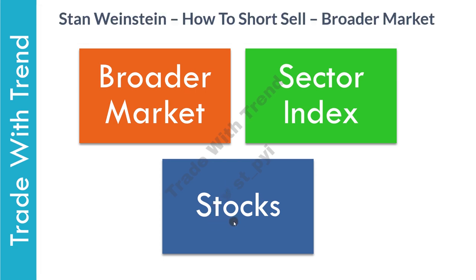If you're trading in the Indian markets, you should first check the trend of Nifty 500, then for a sector index like banks, and then check the trend of individual banking stocks. Similarly, if you're trading in the American markets, you should first check the trend of S&P 500, then for a sector trend like technology, and then check the trend of individual stocks like Apple or Facebook. Do note that all these conditions can be applied to long trades as well.